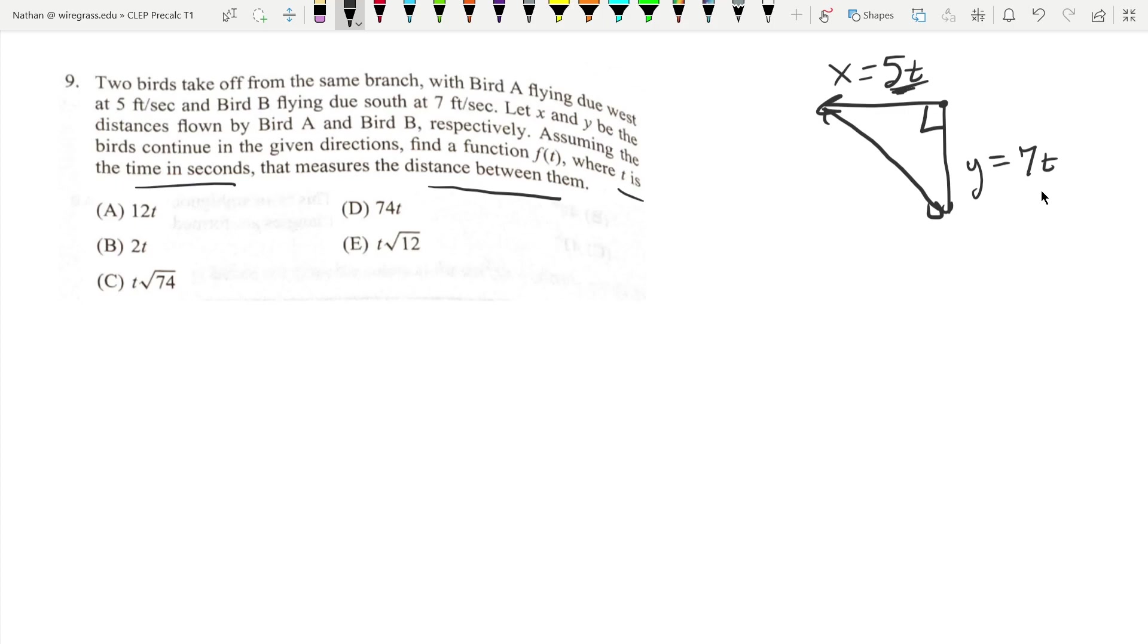We have five t is the distance, seven t is the distance. We want those, not x and y, because we want a function of t.